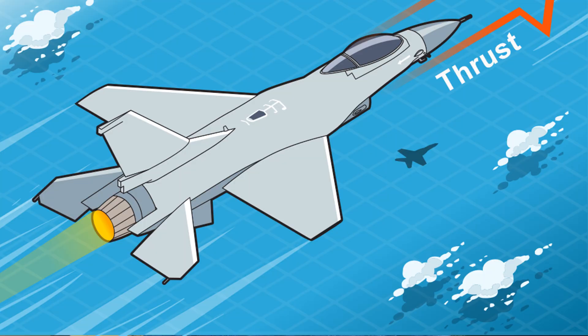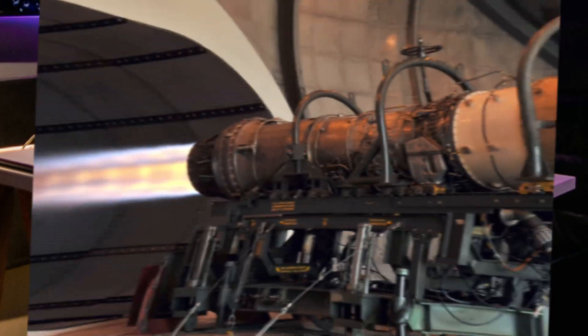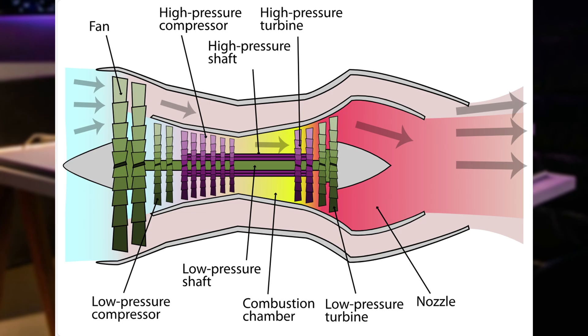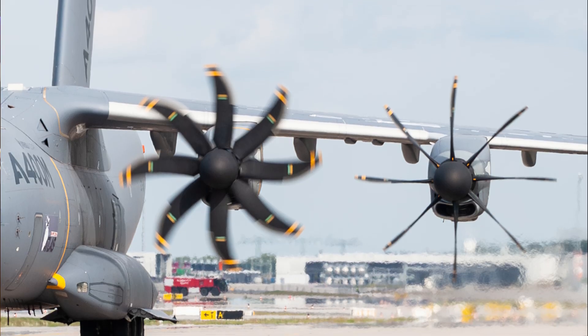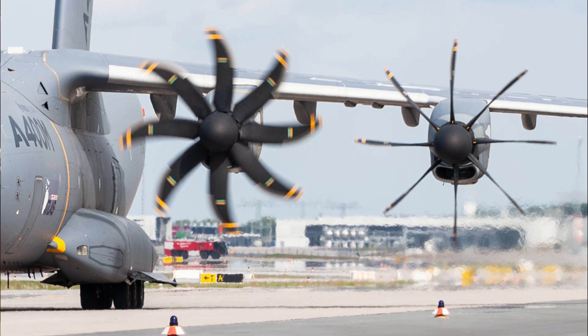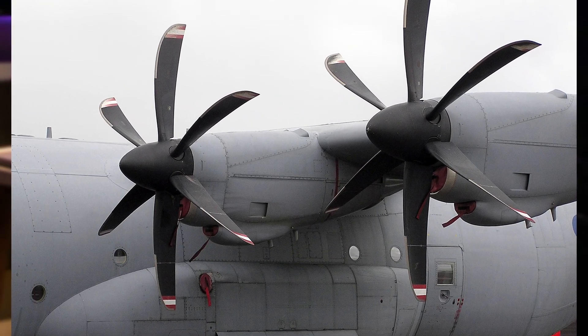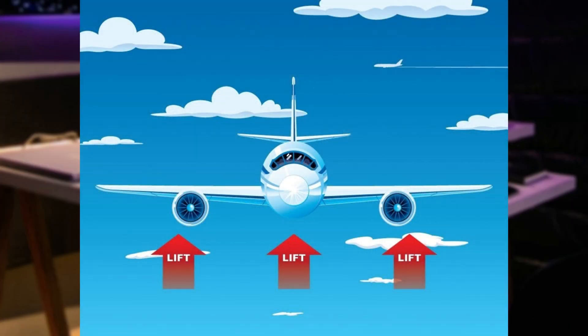That brings us to the second force: thrust, the force that moves the plane forward. Thrust is the force that propels an airplane forward. This force is generated by engines, which can be either jet engines or propellers. Jet engines work by sucking in air, compressing it, mixing it with fuel, and igniting it. The rapid expansion of hot gases pushes the aircraft forward. Propeller-driven planes create thrust by pulling air backward with spinning blades, which moves the aircraft forward. The stronger the thrust, the faster the airplane moves. As the plane speeds up, more air flows over the wings, increasing lift. Once lift exceeds the plane's weight, the aircraft takes off.